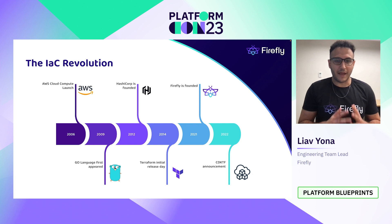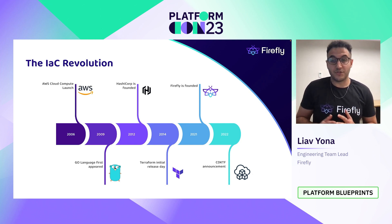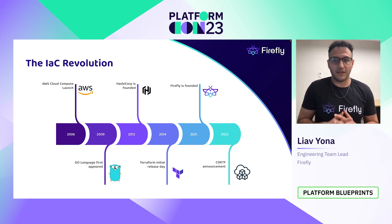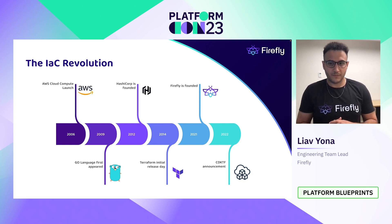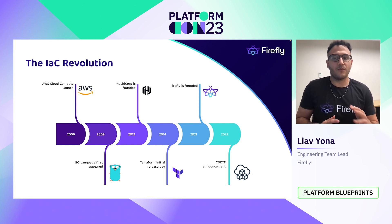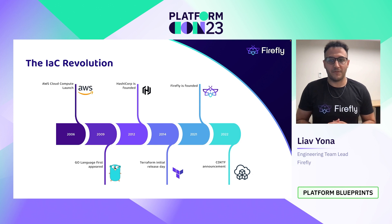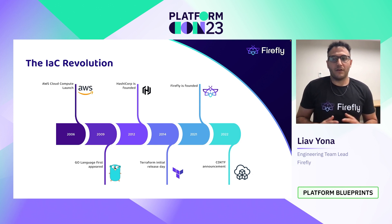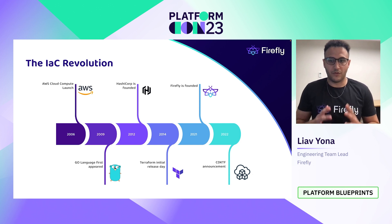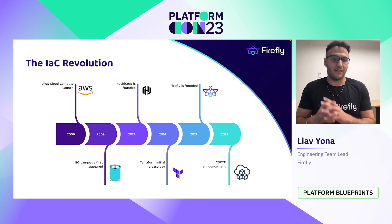Just like when AWS reached widespread adoption and required a management layer, the same is happening in the world of infrastructure as code. With the massive adoption, the ability to manage your infrastructure as code at scale became a core requirement. And this is where Firefly comes in — we are there to help teams adapt the infrastructure as code concept as fast, efficiently, and at large scale as possible.